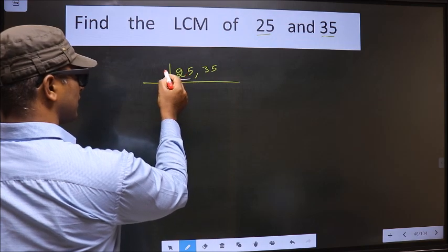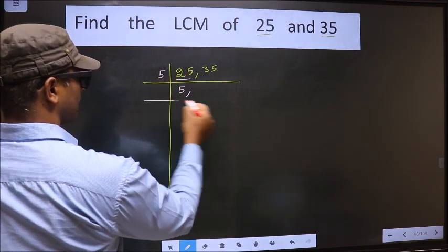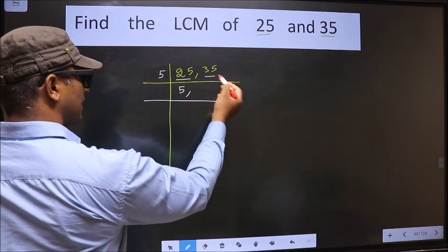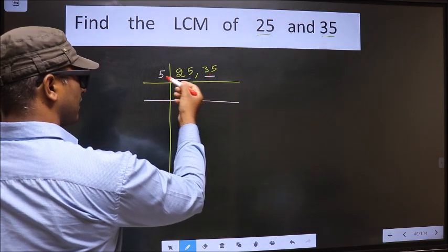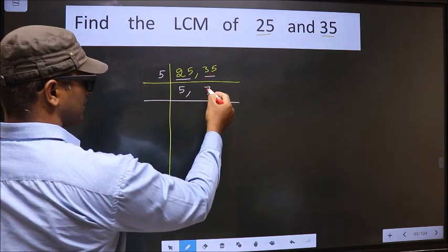25 is 5 times 5. The other number is 35. When do we get 35 in the 5 table? 5 times 7 is 35.